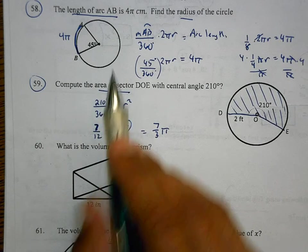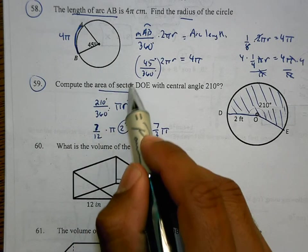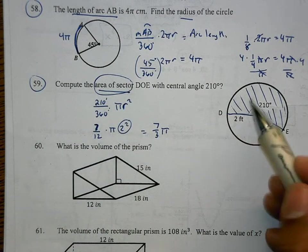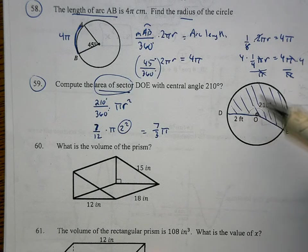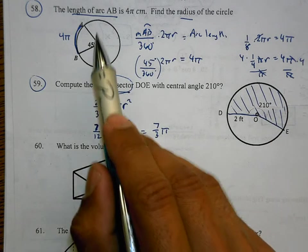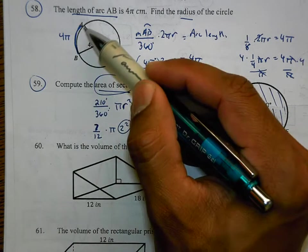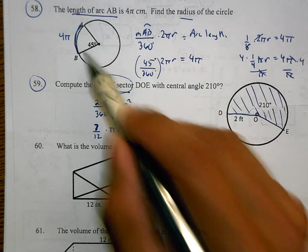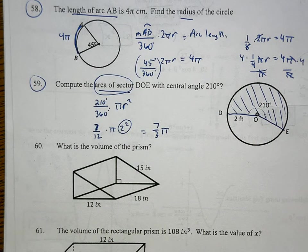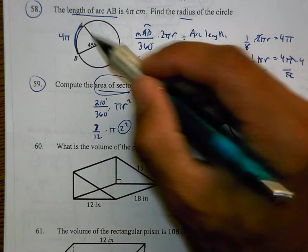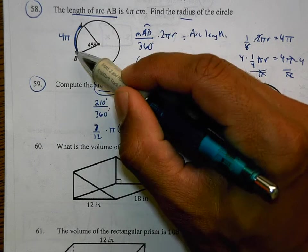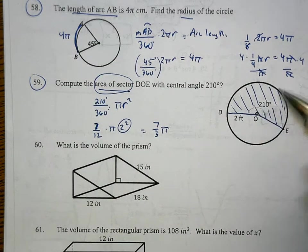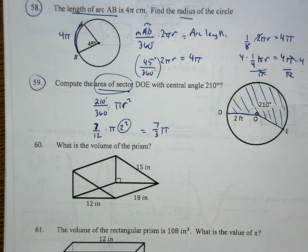The biggest reason that this one is different from this one is this is talking about the area of the sector. We're talking about how much filling there is, whereas in 58 we're talking about the distance around the outside edge. We're not talking about the fill-in. Arc length is a distance we're going to just measure the sidewalk on the outside. Here is how much concrete is there inside that circle patio type of thing.